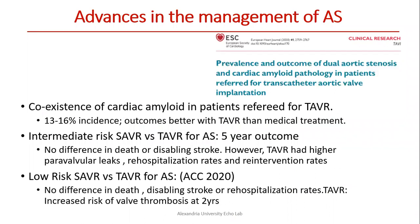Regarding advances in the management of aortic valve stenosis in 2020, there was a coexistence of cardiac amyloidosis in patients with aortic valve stenosis referred for TAVR. They found more than 15% association between aortic stenosis and cardiac amyloid pathology, and the outcome with TAVR is better than medical treatment. Regarding intermediate and low-risk patients, there is no difference in death, disabling stroke, and re-hospitalization between SAVR and TAVR.